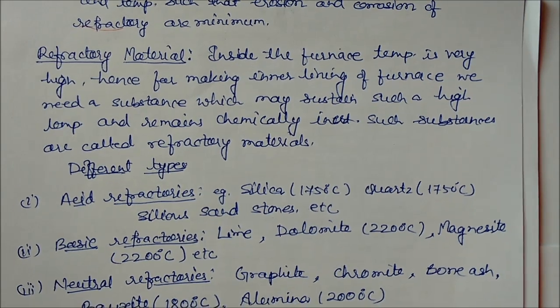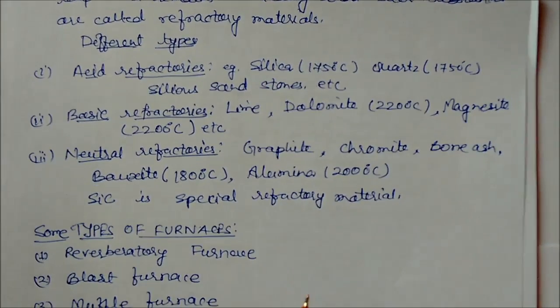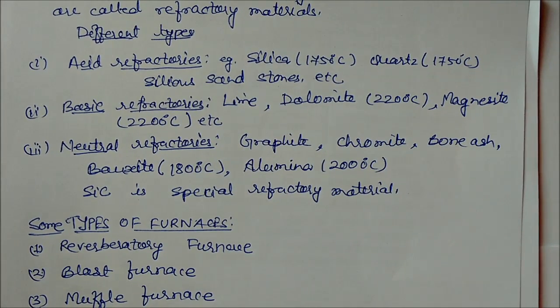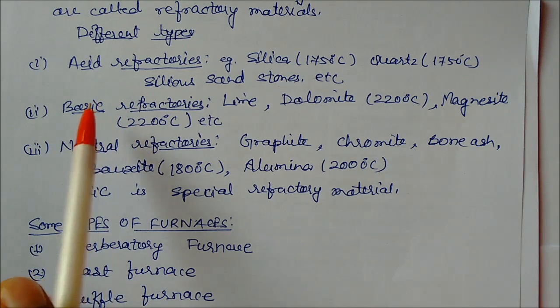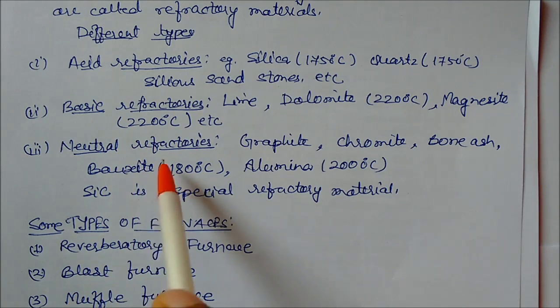These substances are lying on the walls of the furnace, so they can sustain high temperature. Let us see which are the different refractory substances that can be lined in the inner wall of the furnace.